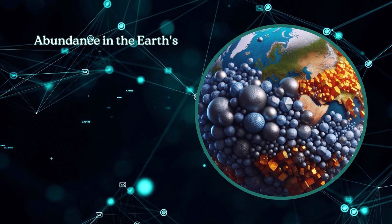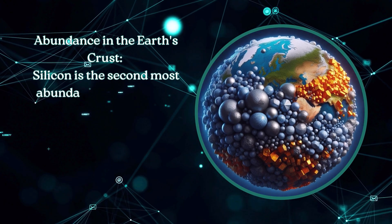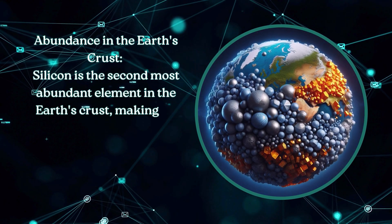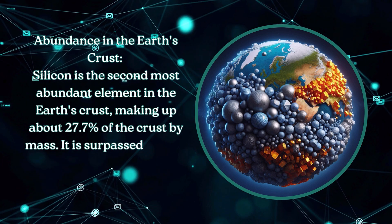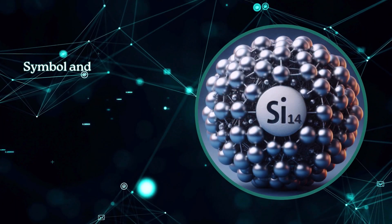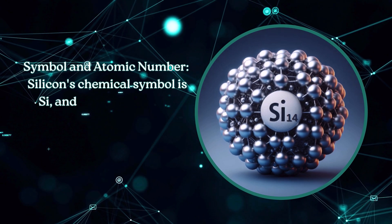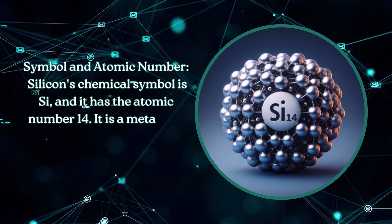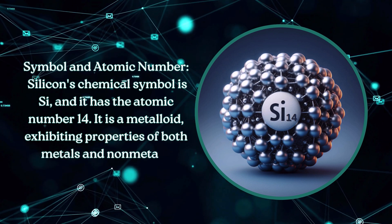Silicon is the second most abundant element in the Earth's crust, making up about 27.7% of the crust by mass. It is surpassed only by oxygen. Silicon's chemical symbol is Si and it has the atomic number 14. It is a metalloid, exhibiting properties of both metals and nonmetals.